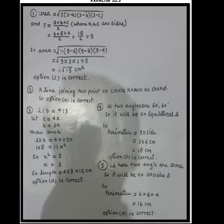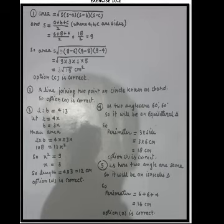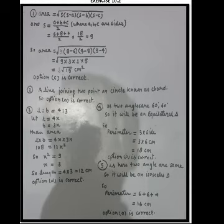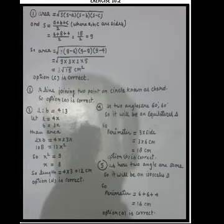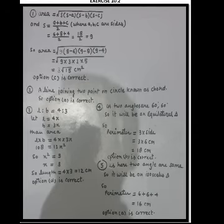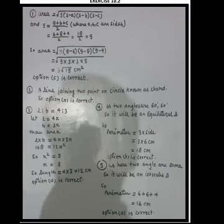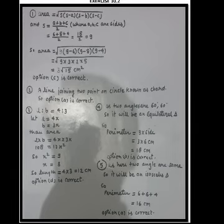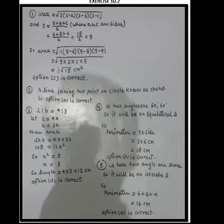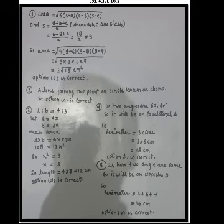Question number 3: the length and width of a rectangle are in the ratio 4:3 and the area is 108 cm². Let L = 4x and B = 3x. Then area = 4x × 3x = 12x² = 108. So x² = 9, x = 3. The length = 4 × 3 = 12 cm. Option D is correct.